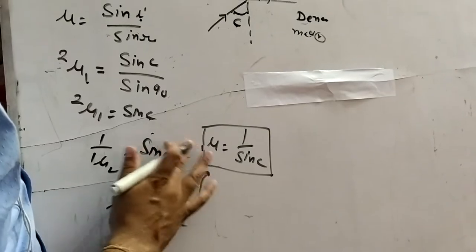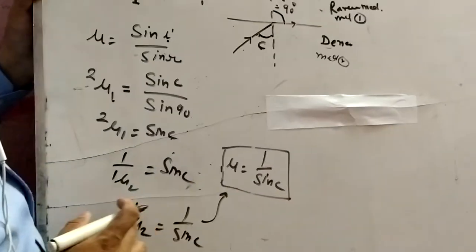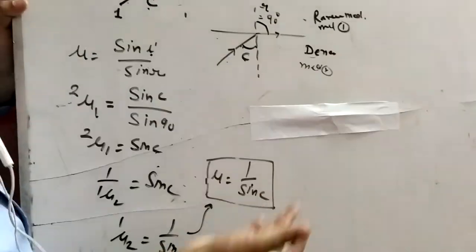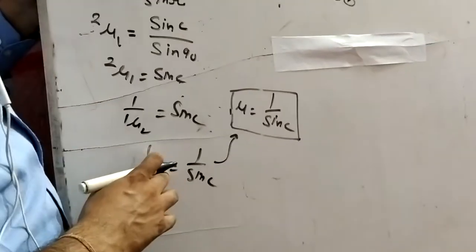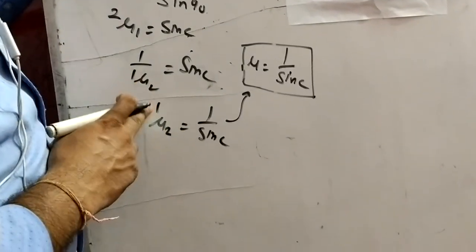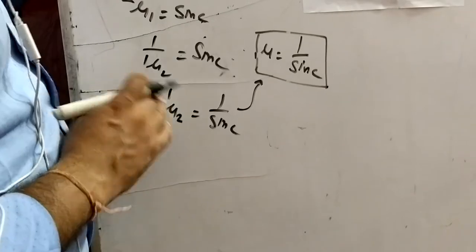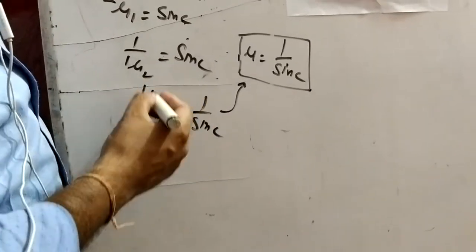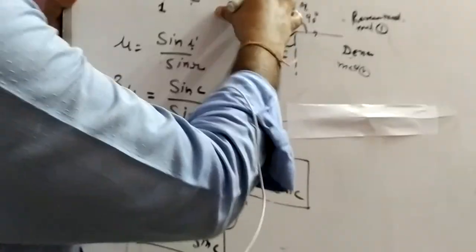So in simple form, mu equals 1 upon sin C. Because you always take refractive index from rare to denser medium. Or you can say refractive index is mostly given with respect to rare medium, like air to glass. So, 1 mu 2 equals 1 upon sin C. This is the formula for critical angle, and this is the phenomenon of total internal reflection.